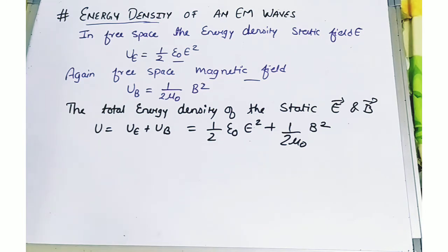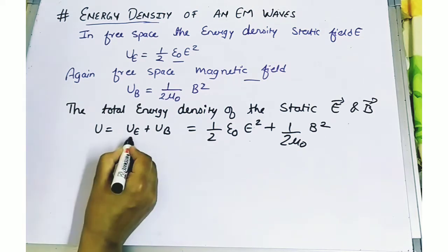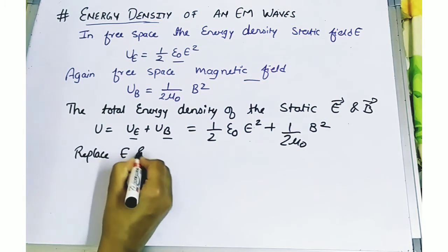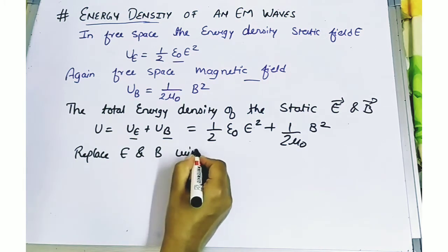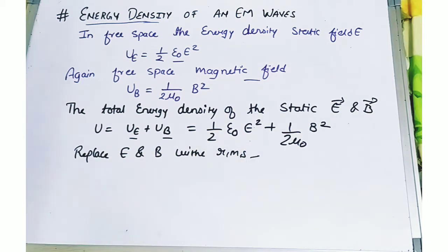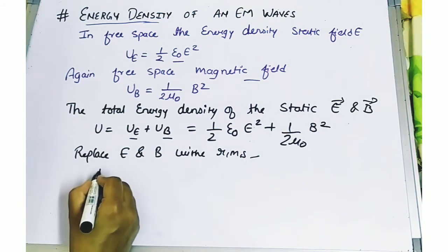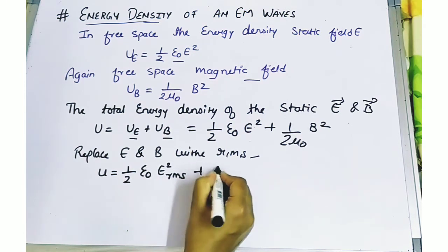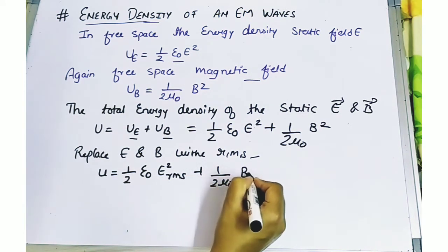For electromagnetic waves, both the electric and magnetic fields are sinusoidal — changing with respect to time. So for the average energy density, we need to replace E and B with their RMS values. Replacing the static electric and magnetic field values with their RMS values gives us: U equals half epsilon naught E²_rms plus half mu naught B²_rms, which represents the sinusoidal average.